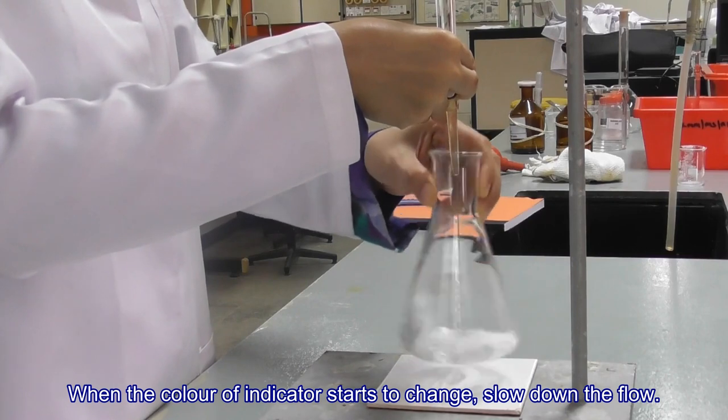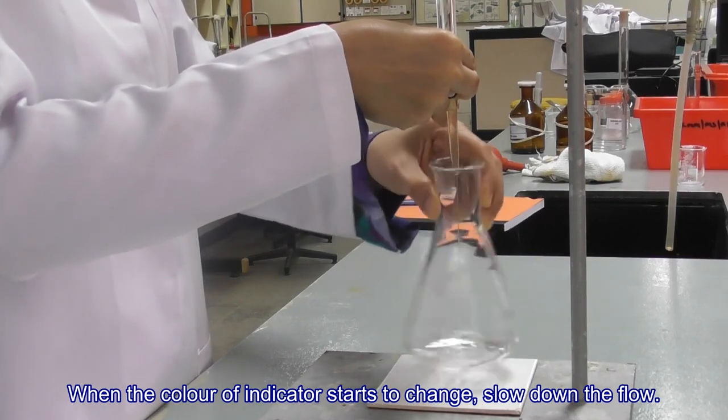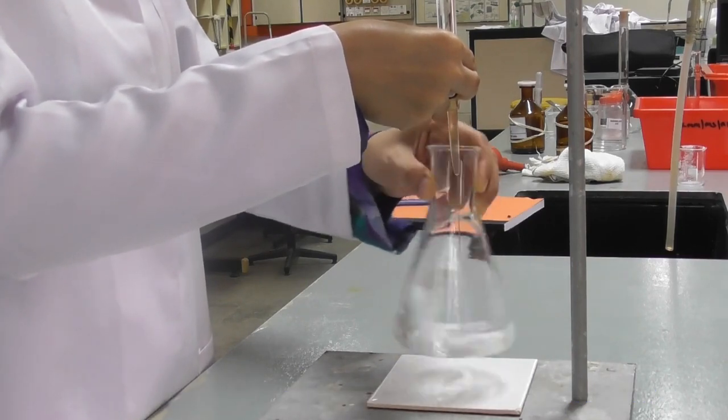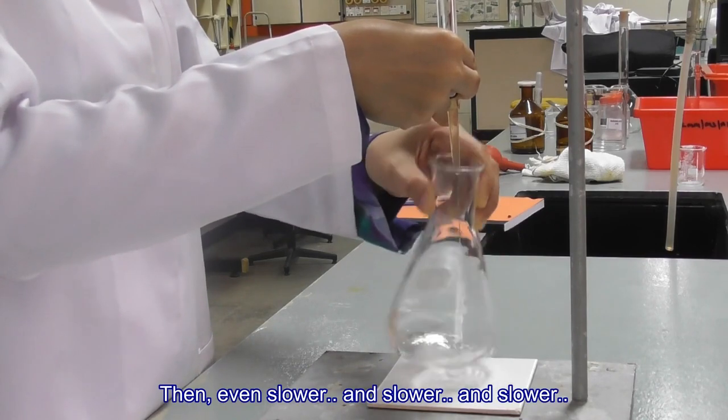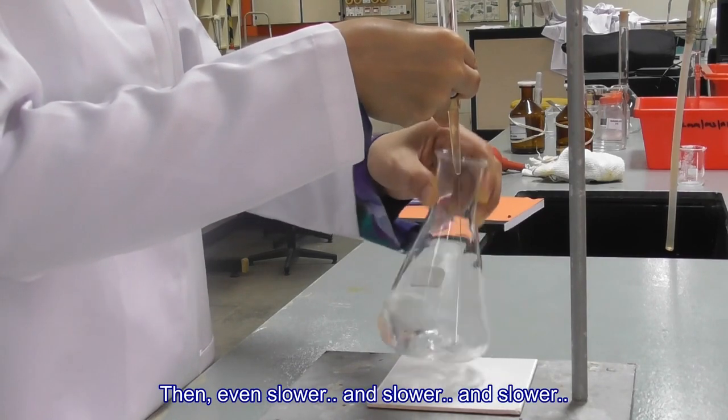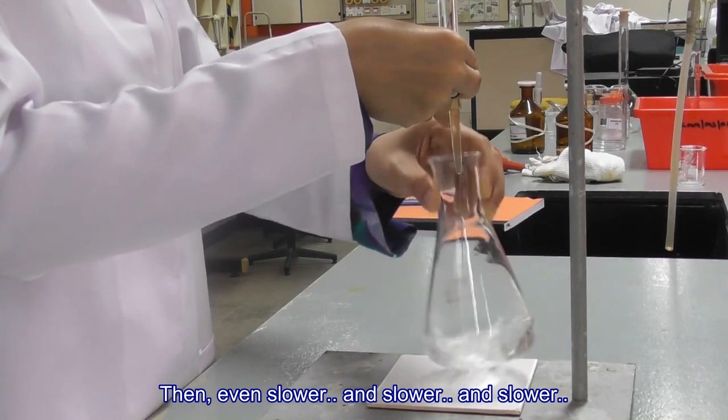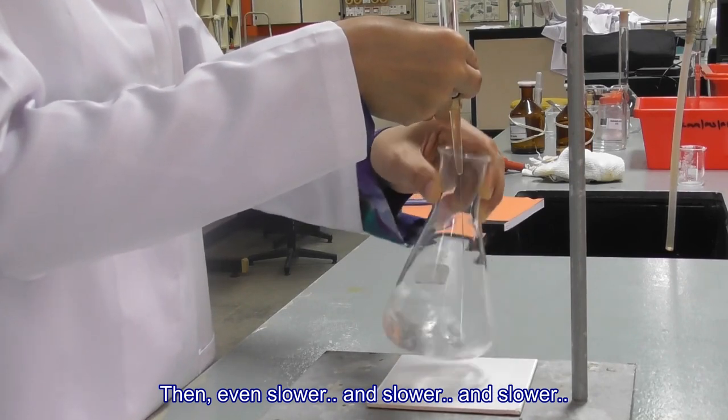When the color of indicator starts to change, slow down the flow. Then even slower, and slower, and slower.